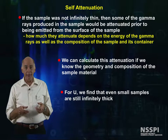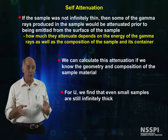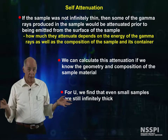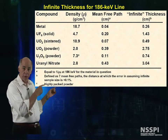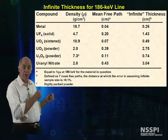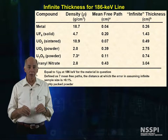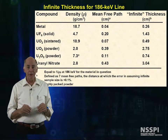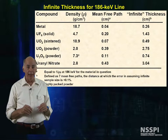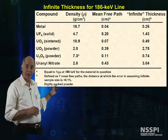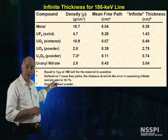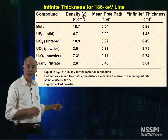For uranium, we find that even small samples are still infinitely thick. This table shows the mean free path, or average distance a photon goes before absorption, of the 186 keV line, and the infinite thickness for this 186 keV gamma for various uranium compositions.